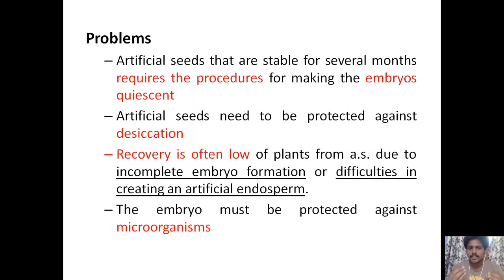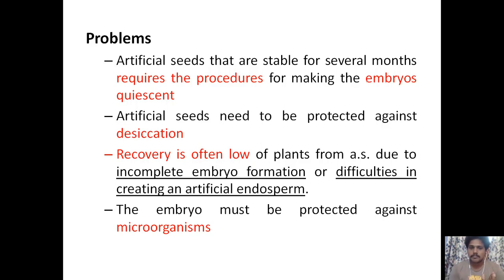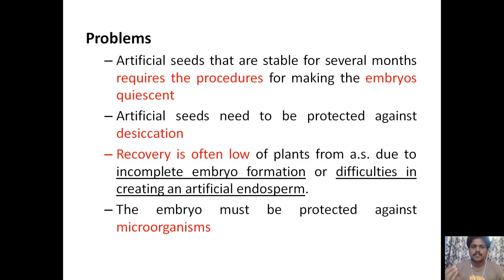Problems associated with artificial seeds: they are stable for only several months, requiring procedures to keep embryos quiescent — neither germinating nor dying. Artificial seeds need protection against desiccation, and recovery percentage is often low due to incomplete embryo formation or difficulty in creating an artificial endosperm. Additionally, embryos must be protected against microorganisms, though the encapsulating material can be equipped with protective chemicals to prevent microbial attacks.